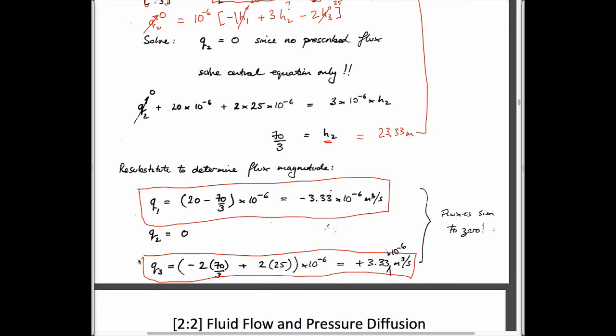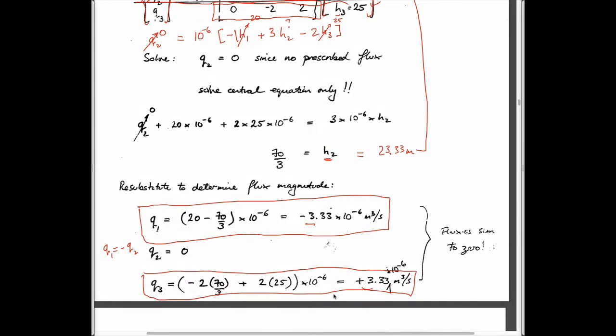Q1 = (20×1)×10⁻⁶·(20 − 23.33) and similarly for Q3. It turns out Q1 = −Q3 as required — the flow rate in equals the flow rate out, satisfying mass conservation. So at least one requirement is satisfied, which is reassuring.